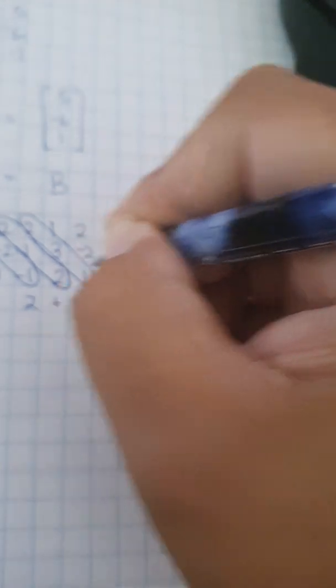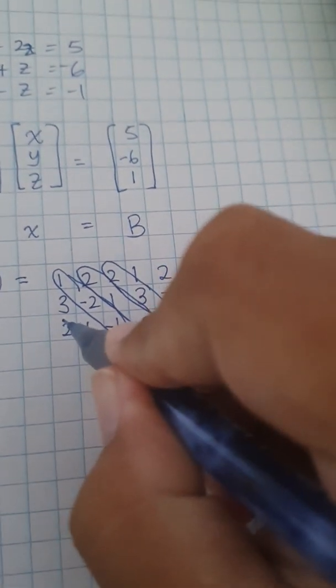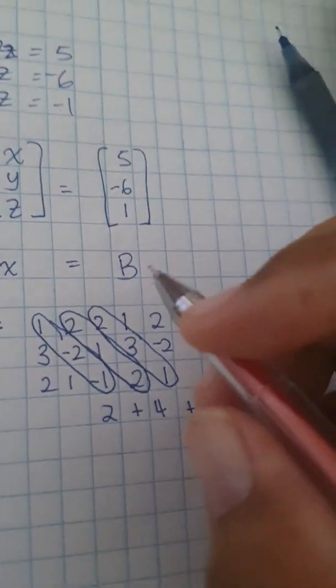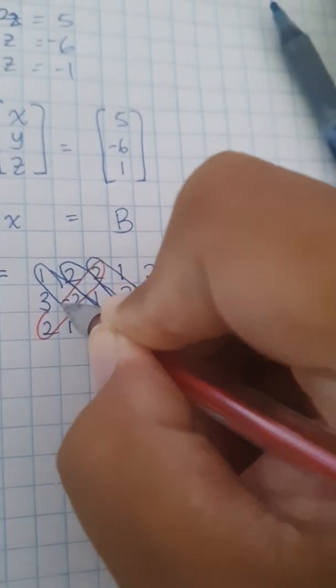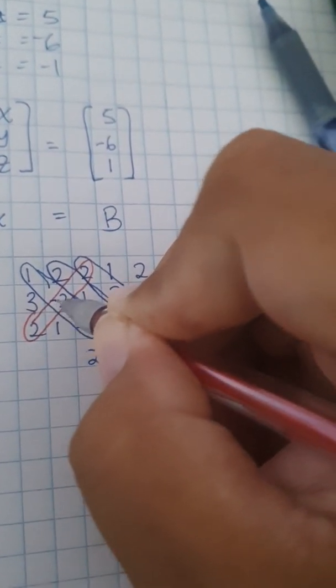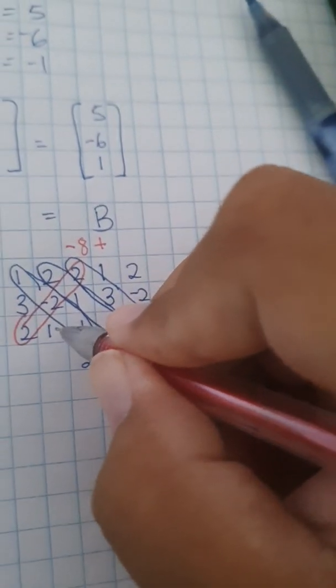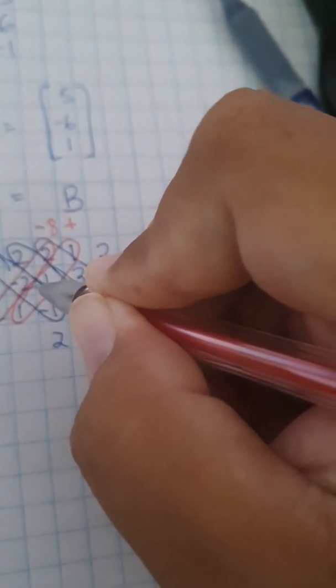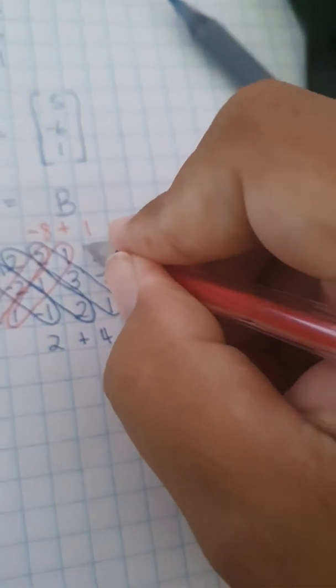Second diagonal. So let me try a different pen. Second diagonal, from here. First diagonal, the same thing. You multiply 2 times negative 2, that's negative 4. Negative 4 times 2, that's negative 8. So here negative 8, plus,